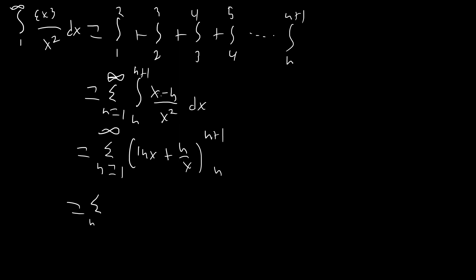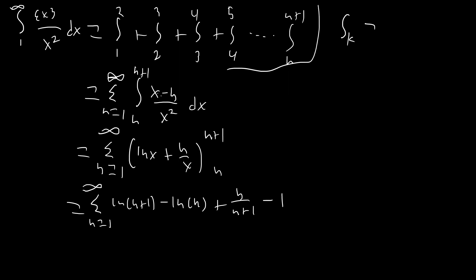So we get the sum from n equals 1 to infinity of ln(n+1) minus ln(n), plus n over n plus 1 minus 1. We're going to break this up into two parts and look at each separately using partial sums, which we'll write as sk — meaning the sum from n equals 1 to k of everything. Let's first look at only the natural log part.